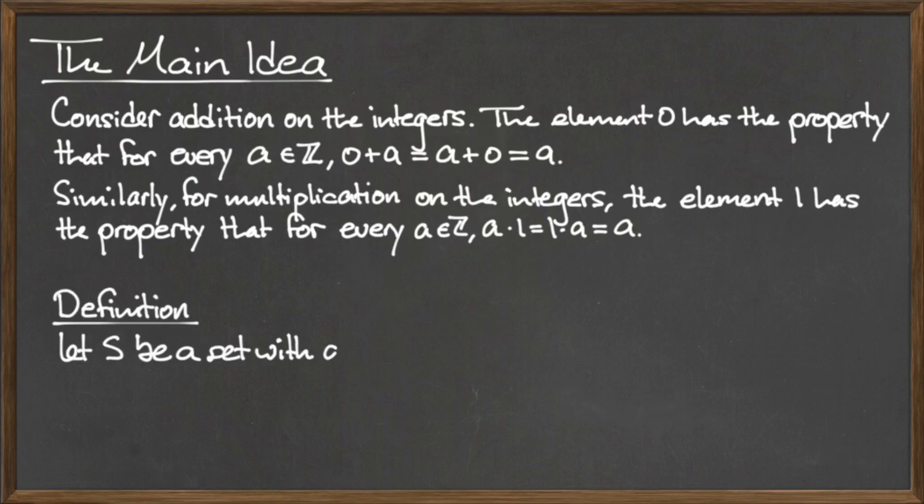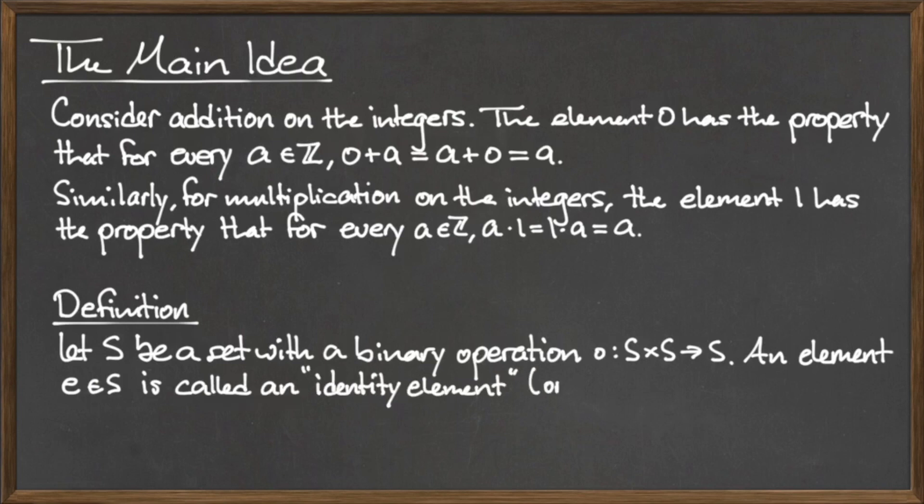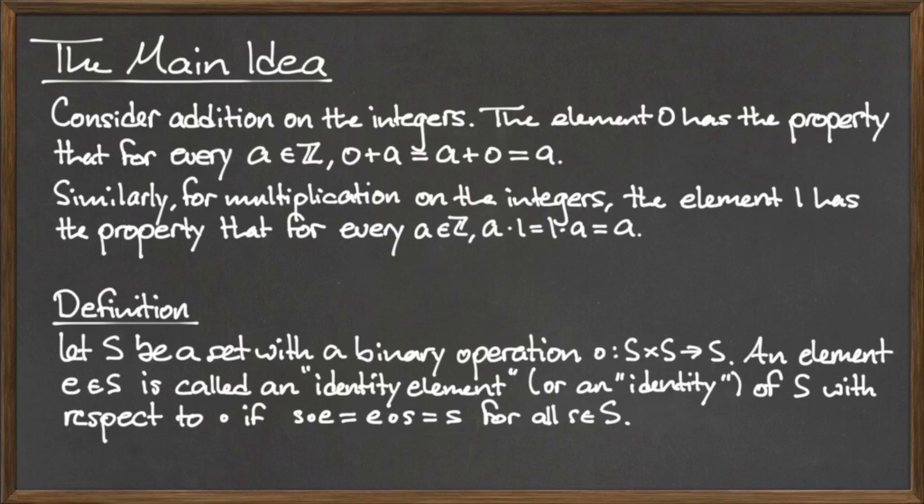Similarly, for multiplication on the integers, the element 1 has the property that for every integer a, a times 1 equals 1 times a equals a. We call 1 the multiplicative identity on the integers.